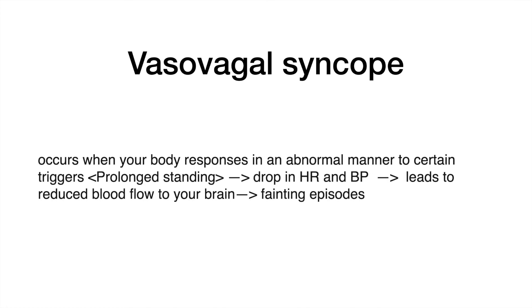How do you explain vasovagal syncope to the patient? Start by saying: based on history and examination, most likely you are having a condition called vasovagal syncope. What's happening is that the body responds in an abnormal manner to certain triggers — in this case, prolonged standing — and that causes a drop in heart rate and blood pressure, which eventually leads to a lack of blood flow to the brain, resulting in fainting. For the differential diagnosis, it is similar to the previous case.